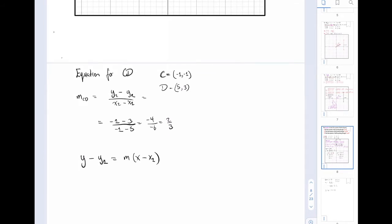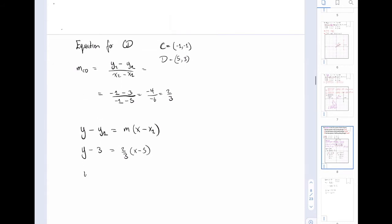I'm going to choose point D, so this means y minus 3 equals m, which is 2 over 3, times x minus 5. Now I transpose for y, which gives me y equals 2 over 3 times x minus 5 plus 3.